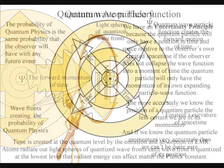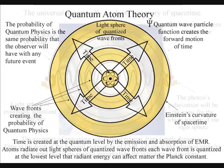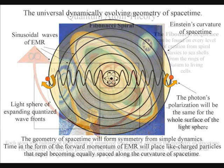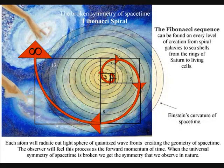We have a universal dynamically evolving geometry of space-time, forming symmetry from simple dynamics. The forward momentum of electromagnetic radiation will place light-charged particles that repel, becoming equally placed along the curvature of space-time. Only a slight distortion in the space-time symmetry will spiral out, creating the imperfect symmetry of the observer.